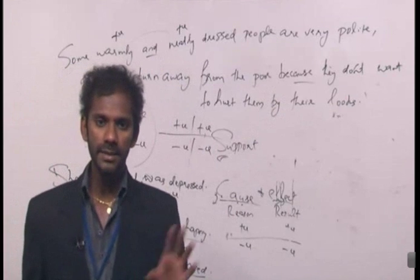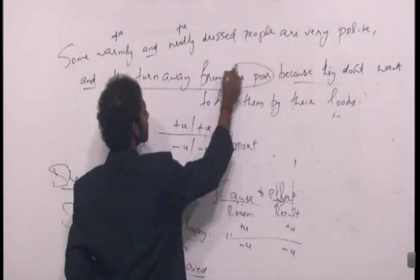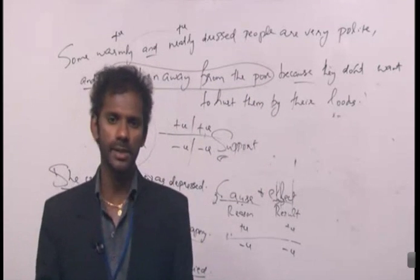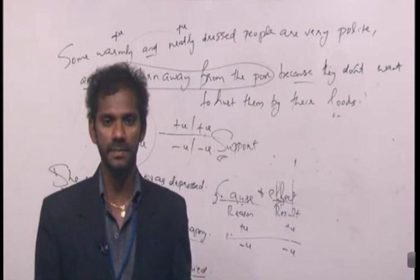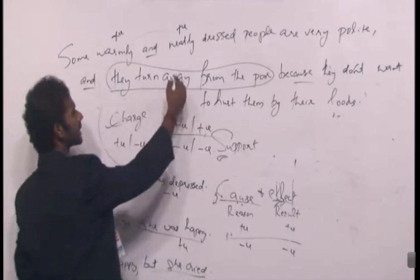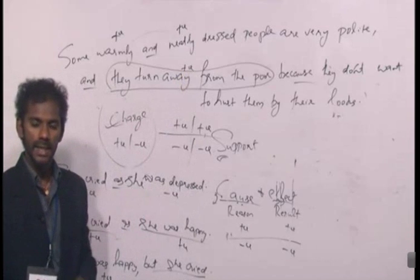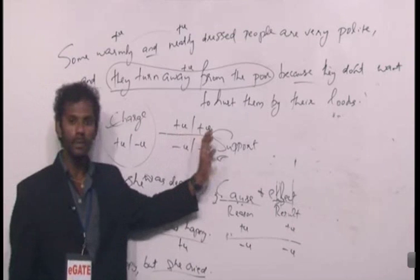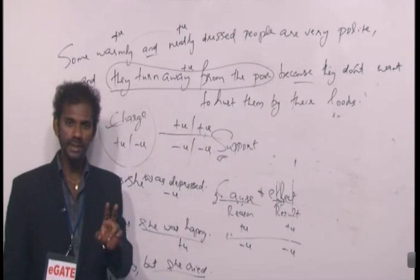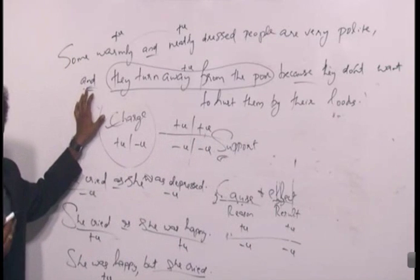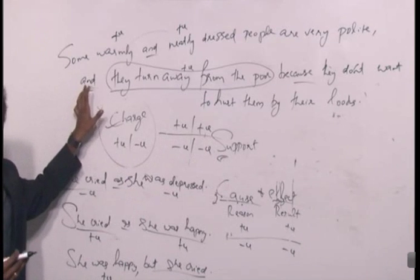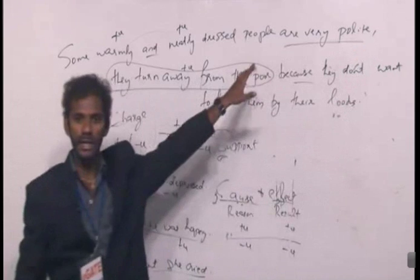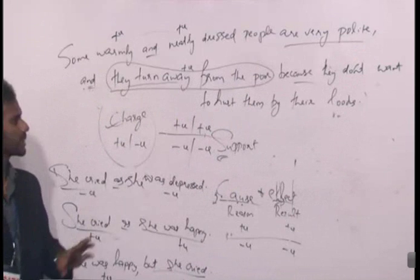In this context, is 'they turn away from the poor' a negative or positive idea? It is positive. Here's why: 'And' is a support indicator. The two ideas it connects are 'they are very polite' and 'they turn away from the poor.' 'They are very polite' is positive. Since 'and' is a support indicator, the second idea must also be positive. So 'they turn away from the poor' must be positive.